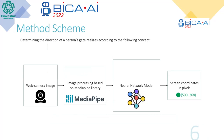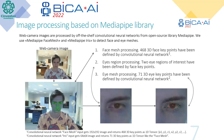Determining the direction of a person's gaze is realized according to the following concept: the web camera image is processed by the MediaPipe library, the processed data is fed to the neural network model input, and the neural network model predicts coordinates in pixels on the monitor screen. Image processing is based on the MediaPipe library. Web camera images are processed by off-the-shelf convolutional neural networks from the open-source library MediaPipe. We use MediaPipe Face Mesh and MediaPipe Iris.